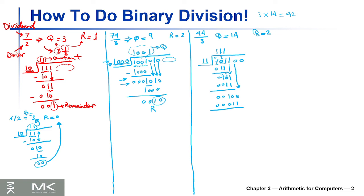For the subtraction, we borrow: this becomes 0, the middle becomes 2, and since we borrow from it, it becomes 1, while the last bit's original borrow makes it 2. So 2 minus 1 is 1, 1 minus 1 is 0, then zeros. We bring down the last bit, which is 0. Can 1 1 go into 1 0? No, so we put 0 here and stop because there are no bits left in the dividend. That's the quotient — 14 as expected — and the remainder is 2 as expected.